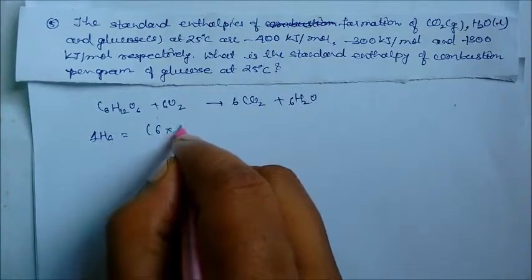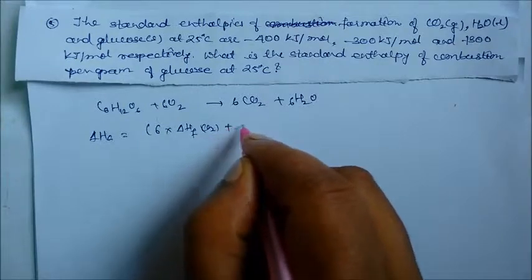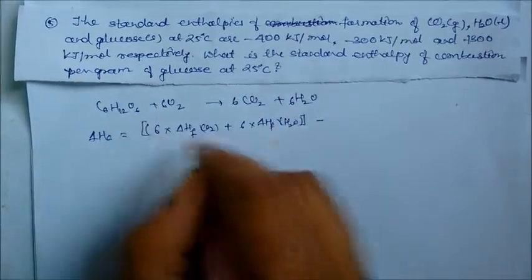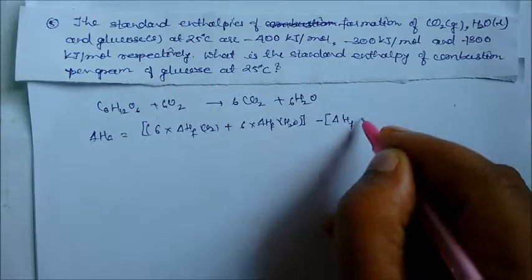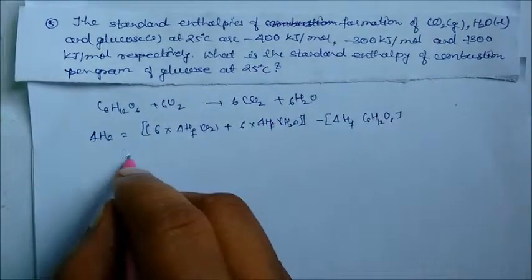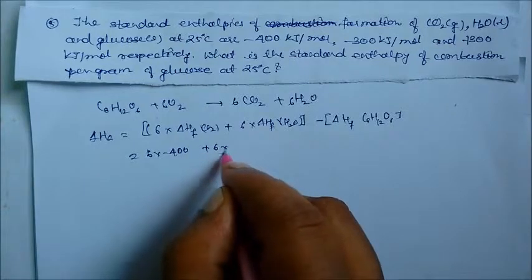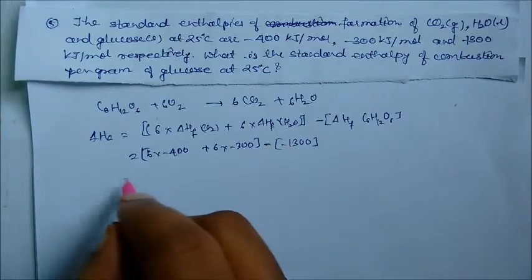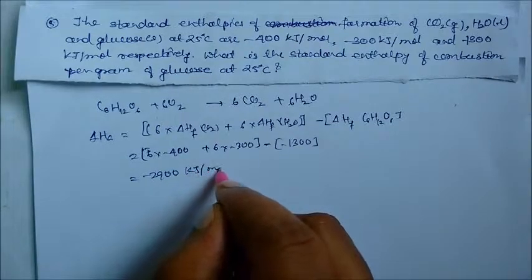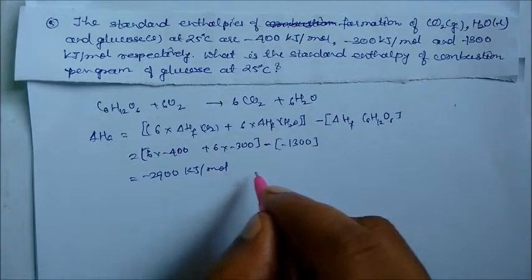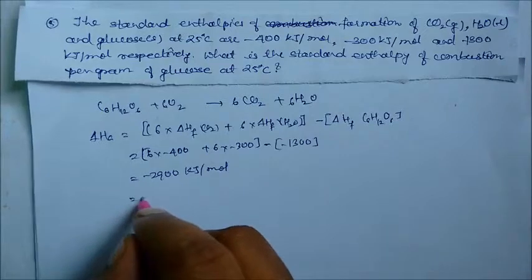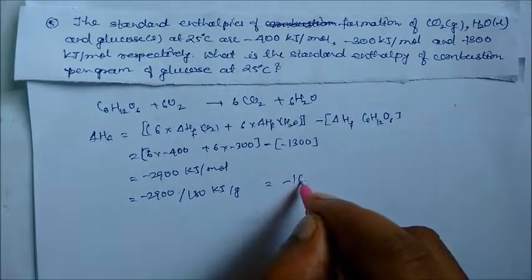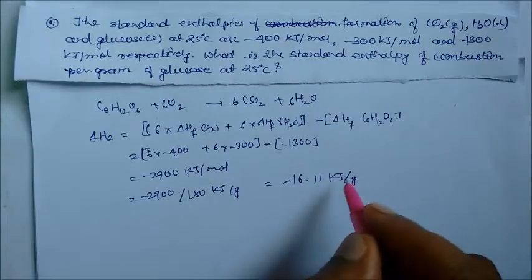Heat of combustion of glucose equals sum of heats of formation of products minus reactants: 6 into (minus 400) plus 6 into (minus 300), minus (minus 1300). On solving, we get minus 2900 kilojoule per mole. Per gram, it is minus 2900 divided by 180, giving minus 16.11 kilojoule per gram. This is our answer.